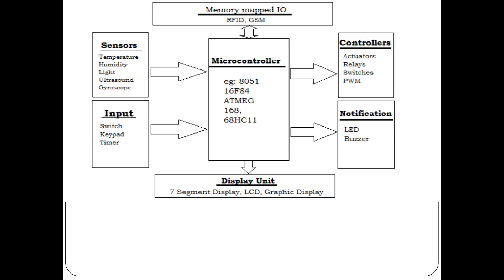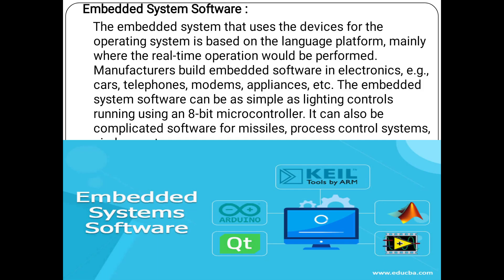This data is given to a microcontroller, which can be a PIC16F84, Atmel 16F, or 68HC11. The controller can drive actuators, relay switches, and PWM outputs. Through this, we can give notifications via LED or buzzer, and the display can be a 7-segment display, LCD, or graphic controller.